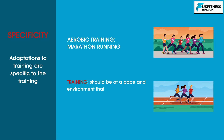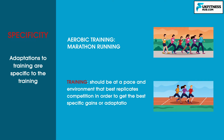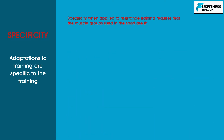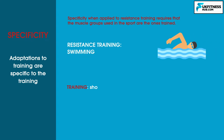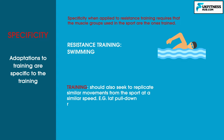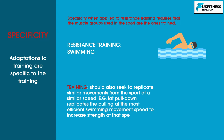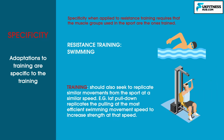Training should be done at a pace and in an environment that best replicates competition in order to get the best specific gains or adaptations for competition. Continuous training, such as running outside, becomes the best method because it specifically reflects the marathon event. Specificity when applied to resistance training requires that the muscle groups used in the sport are the ones being trained. Training should also seek to replicate a similar movement from the sport at a similar speed. For example, if strength training for a swimmer, a lat pull-down machine could be used to replicate the pulling movement of swimming.